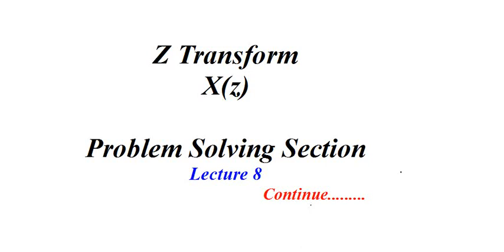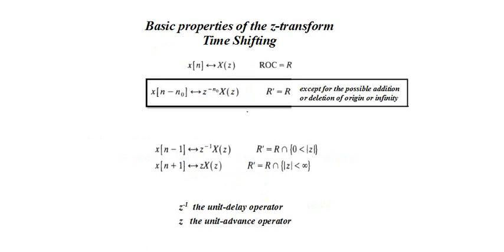In Lecture 8, we will mainly focus on the Z-transform property known as time shifting. For example, there is a signal X(N) and its transform is X(Z). If there is a time-shifted signal X(N minus N₀), its Z-transform can be written as Z raised to minus N₀ into X(Z). So X(Z) is the transform of X(N), and the new signal's transform is simply the multiplication by Z raised to minus N₀.